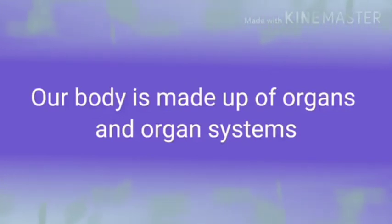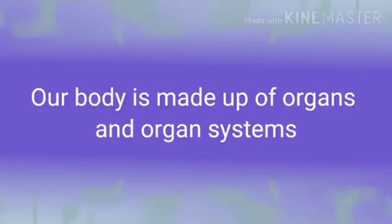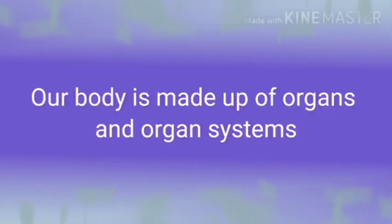The human body is made up of organs and organ systems. Some organs such as hands, nose, ears, eyes, and legs are present on the surface of the body and they are visible, so these organs are called external organs. While organs such as lungs, heart, and stomach are present inside the body and cannot be seen easily — these are called internal organs.